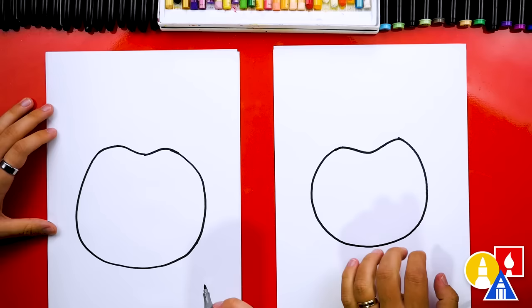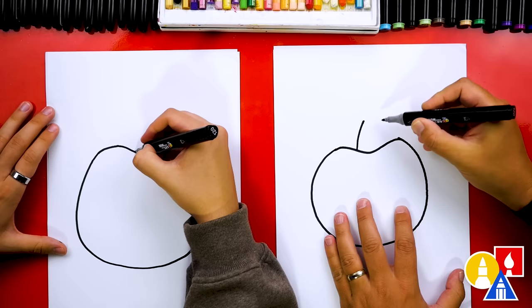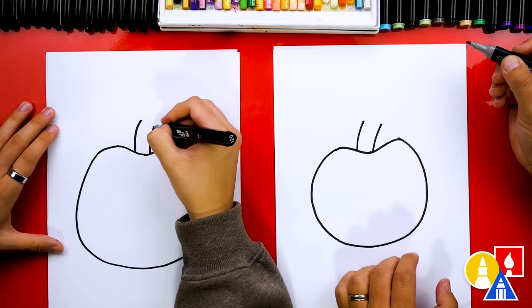Let's keep going. Now let's draw the stem. We're going to draw it coming out of the top of our elephant fruit. We're going to draw a curve like this and another curve right next to it. And then at the top, we're going to draw a squished oval shape to connect those two lines together.